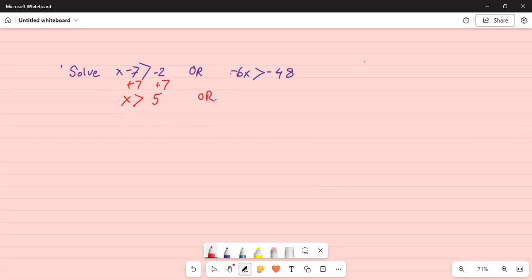Or minus 6x greater than minus 48. Divide by minus 6 on both sides. But when you divide by a negative number, the inequality flips. So x is less than minus 48 divided by minus 6 is 8.